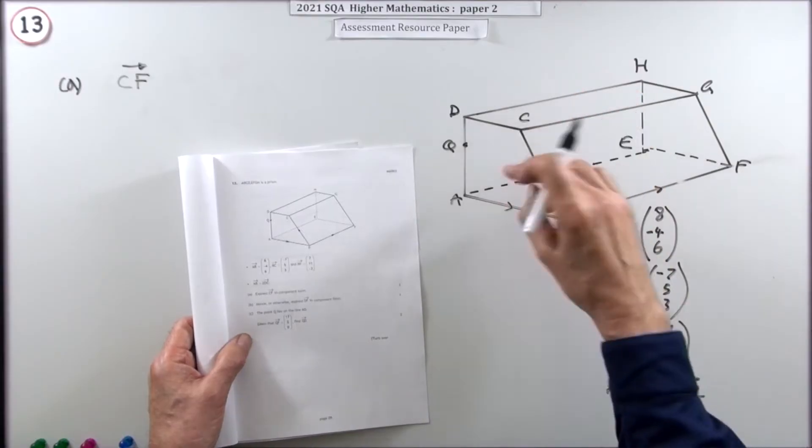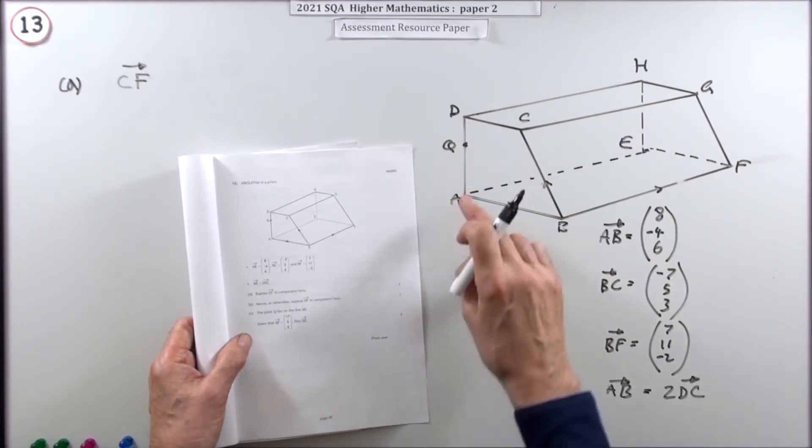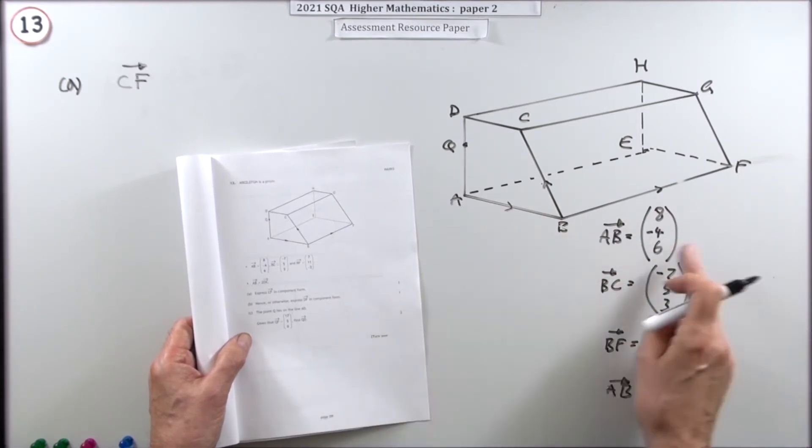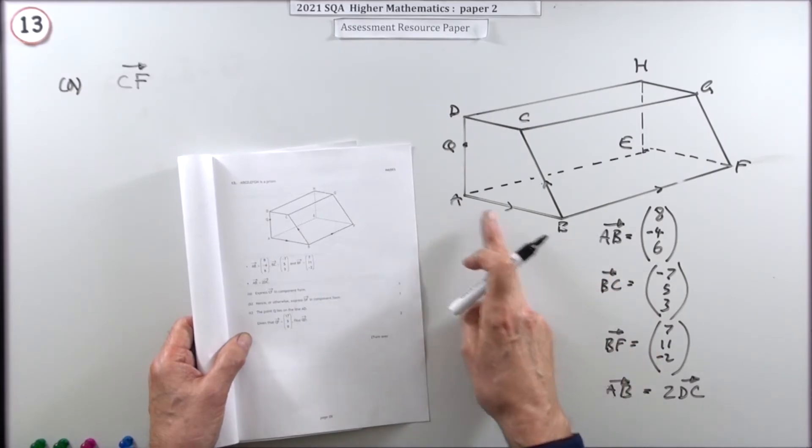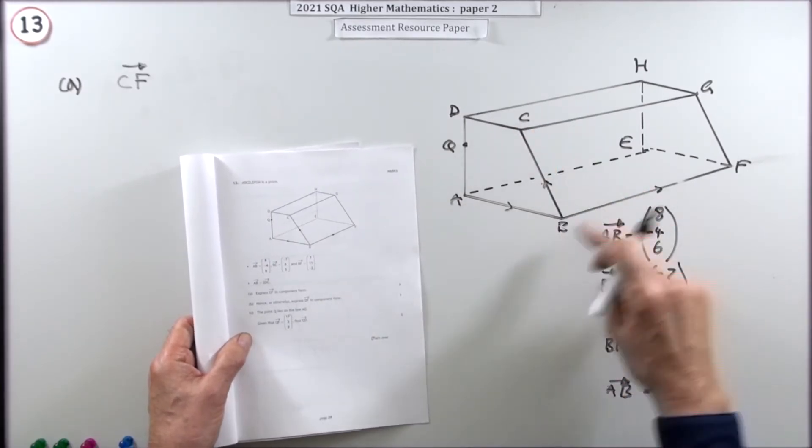You've got this three-dimensional wire model, this prism here, and it gives you the displacements, the vectors, which aren't just displacements because they tell you to get from point to point, getting displaced. It gives you the displacements for A, B, B, C and B, F.